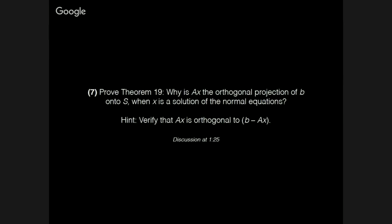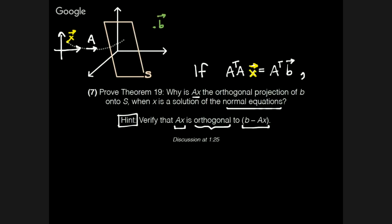And then once we find that x, applying A to x gives us an element back in my subspace, Ax. And what you're verifying is that the line connecting Ax to B is perpendicular to the subspace S.